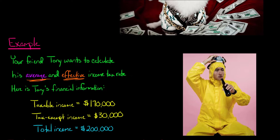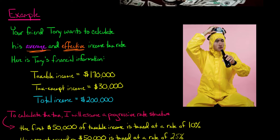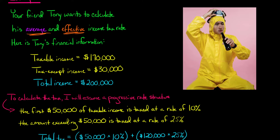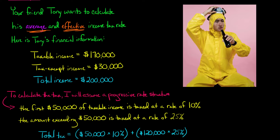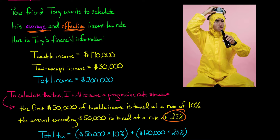To calculate Tony's income tax, I'm going to assume a progressive rate structure with made-up tax rates. The first $50,000 of taxable income is taxed at 10%, and any amount of taxable income exceeding $50,000 is taxed at 25%. So we basically have two income tax brackets — higher rates for higher income.